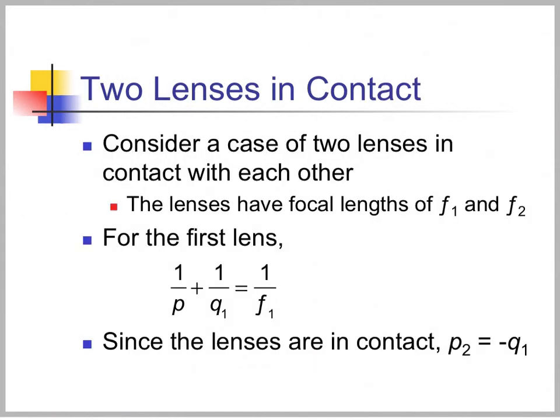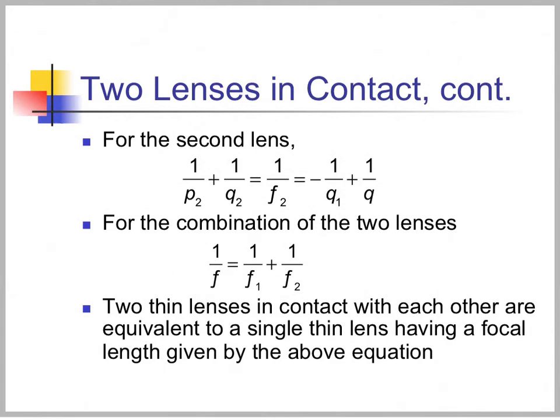If two lenses are in contact with focal lengths f1 and f2, then for the first lens 1 over P plus 1 over Q1 equals 1 over F1, and since the lenses are in contact, P2 equals minus Q1. Combining the two lens equations gives: 1 over the focal length of the combination equals 1 over F1 plus 1 over F2. So two thin lenses in contact are equivalent to a single thin lens with the focal length given by this equation.